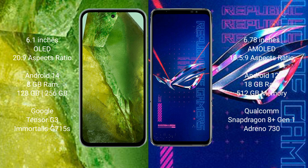Google Pixel 8a comes with 8GB RAM and 128GB or 256GB internal storage, a Tensor G3 processor, and GPU Mali-G715. ASUS ROG Phone 6 Pro comes with 18GB RAM and 512GB internal storage, a Qualcomm Snapdragon 8 Gen 1 processor, and Adreno 730 GPU.